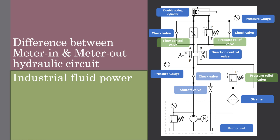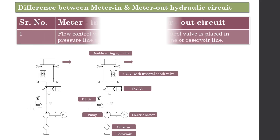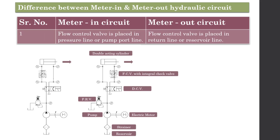In this video we'll understand the difference between meter-in and meter-out hydraulic circuits. The first difference is that in a meter-in circuit, the flow control valve is placed in the pressure line or pump port line, whereas in a meter-out circuit, the flow control valve is placed in the return line or reservoir line.